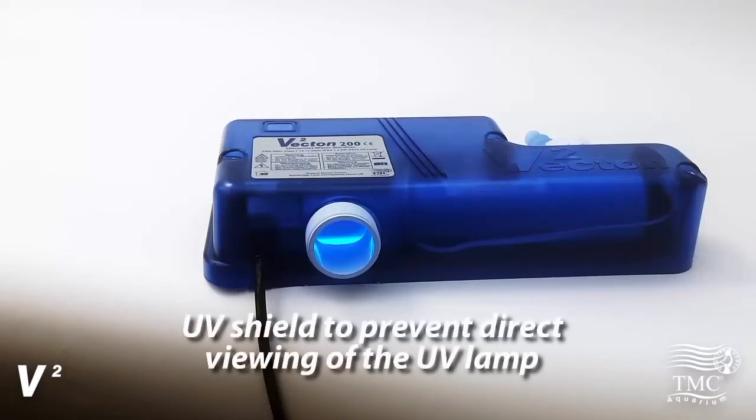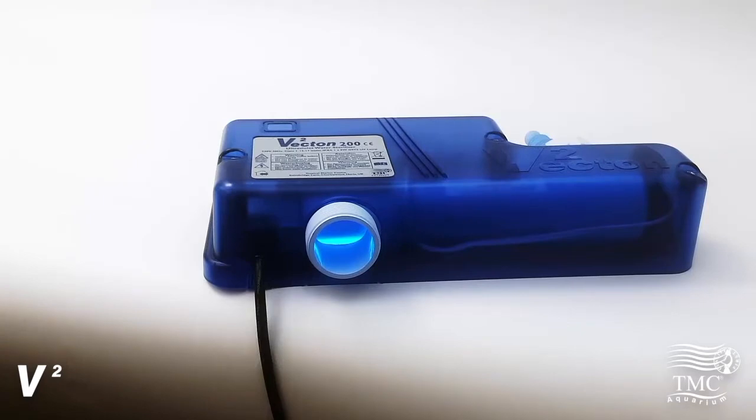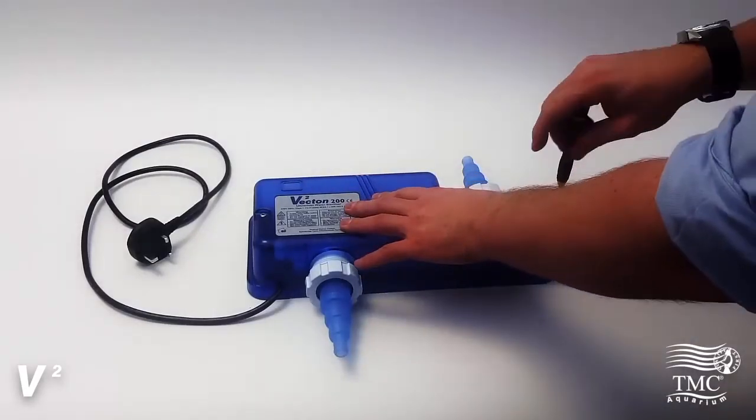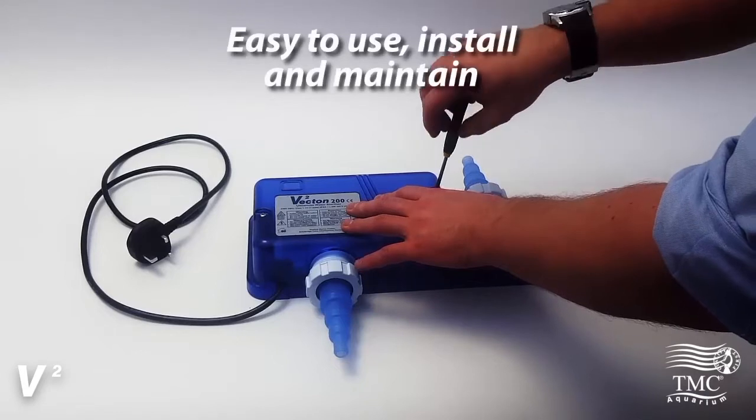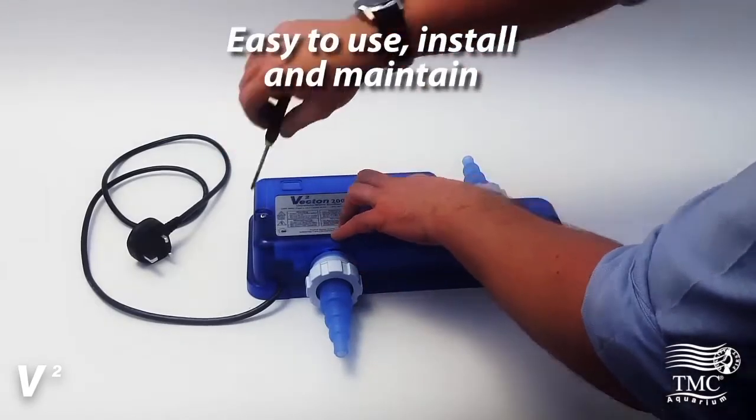Inside the UV is a UV shield to prevent direct viewing of the UV lamp. This will protect your eyes. However, the hose tails will glow blue in normal operation. This simply lets you know that the lamp is working okay.